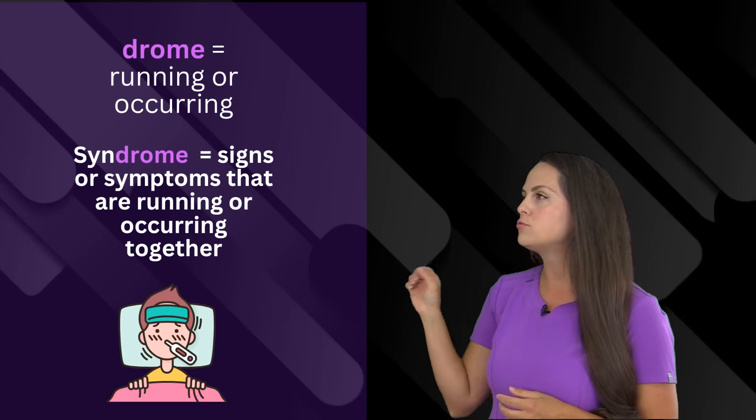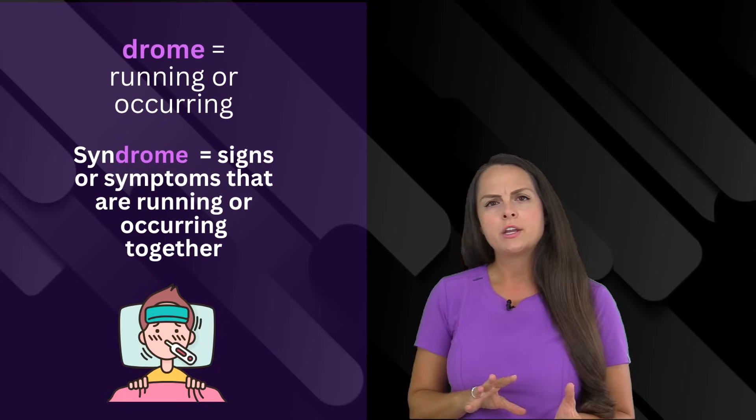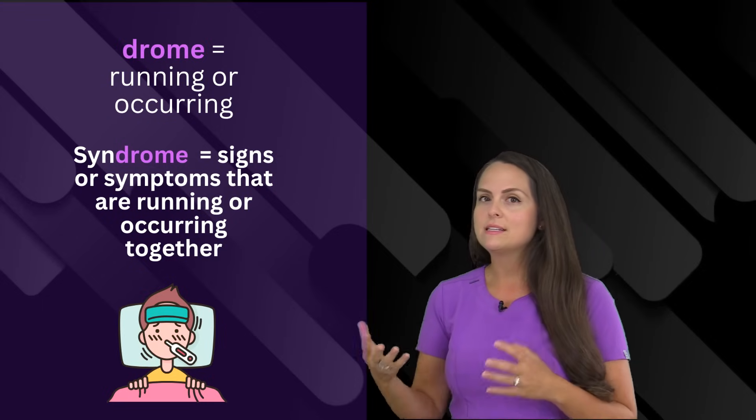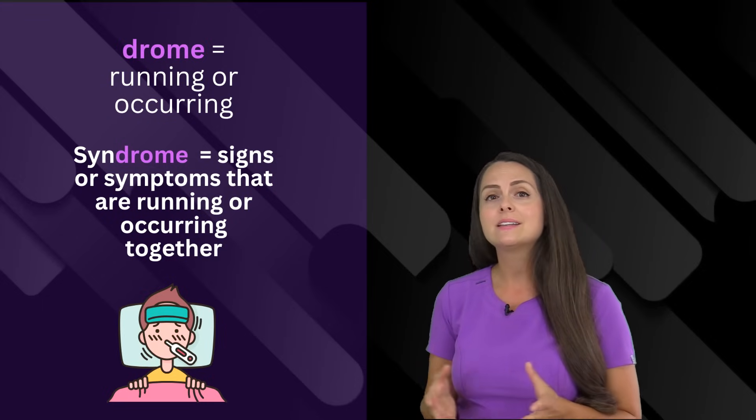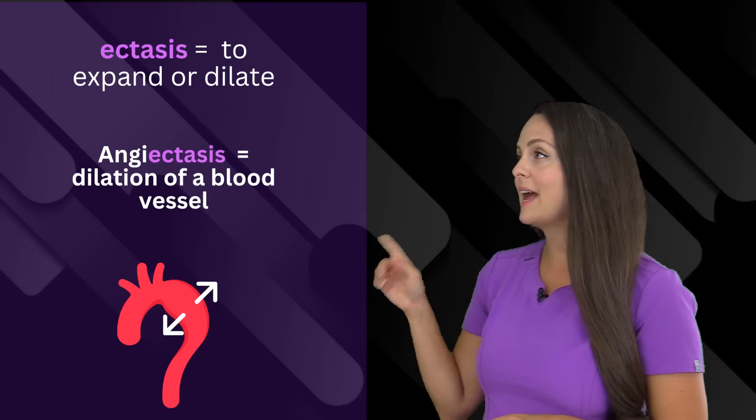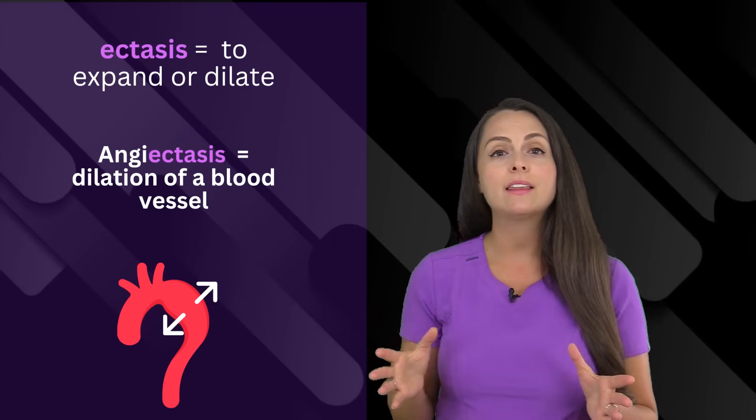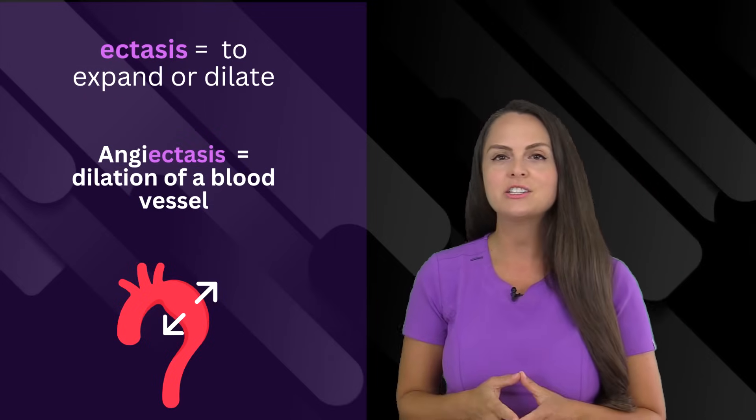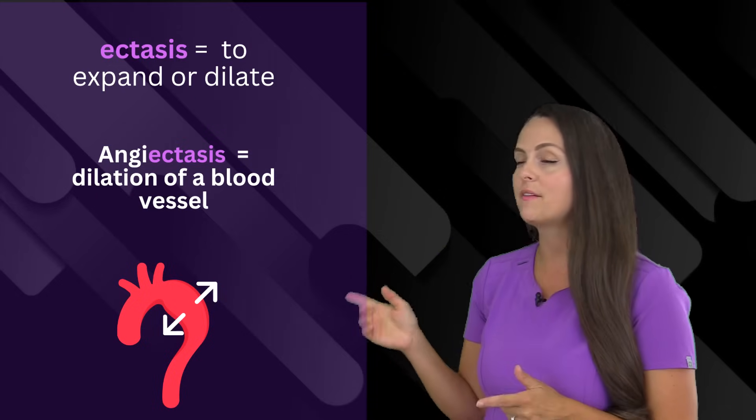Then we have drome. Drome means running or occurring. So when a person says syndrome, we're talking about signs or symptoms that are running or occurring together. Next up is ectasis. This means to dilate or expand. For example, angiectasis means dilation of the blood vessels.